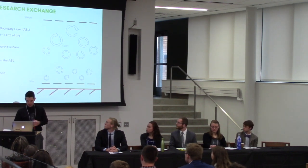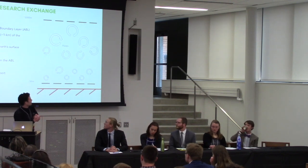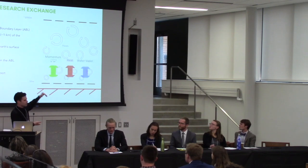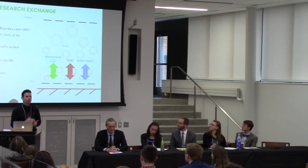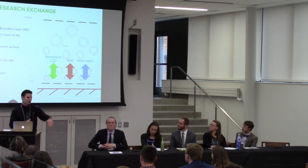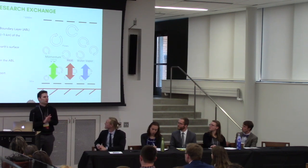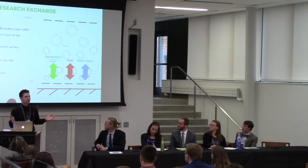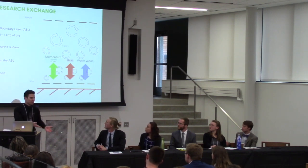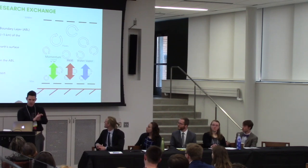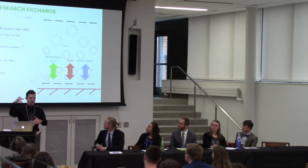A little background: the boundary layer is essentially the lowest layer of the atmosphere — the part influenced by the surface, usually about a kilometer from the ground up. If you imagine walking on a blacktop surface or a parking lot, it's hotter there in the summer. The parking lot heats the air above you more so than if you were standing in the middle of a grassy field. Anything in the air influenced by the surface is what we call the atmospheric boundary layer.